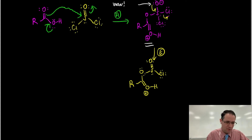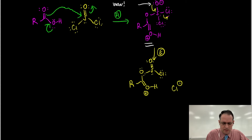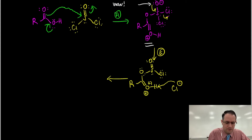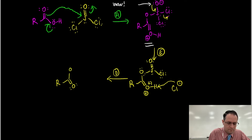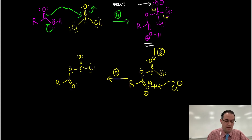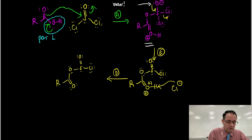Either way it would violate one of our two rules. We have this intermediate here. We'll take chloride and use that as the base for deprotonation. I want to highlight what our leaving group is - basically what we're doing is converting this group, which is a poor leaving group, into this group here, which is an excellent leaving group.